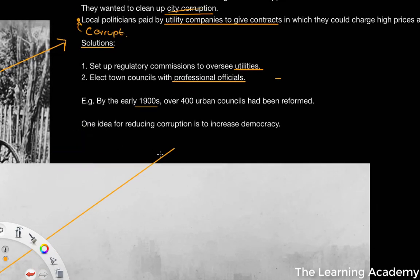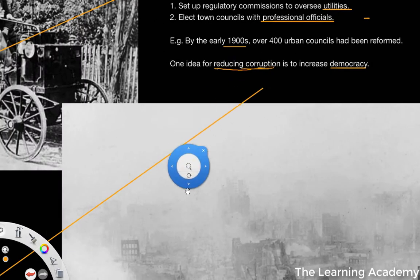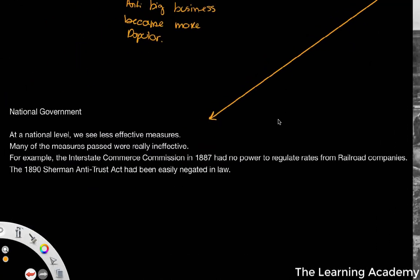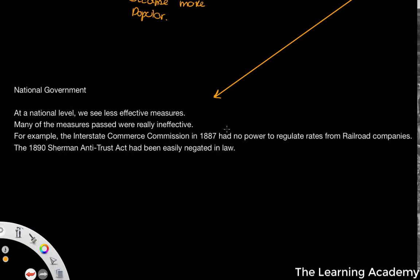Another idea for reducing corruption within the state was to increase levels of democracy. At the national government level, however, there were some less effective measures put in place. Local government did a very good job of trying to clean up corruption within the cities and made some meaningful steps in this period. However, at the national level, they were less effective.